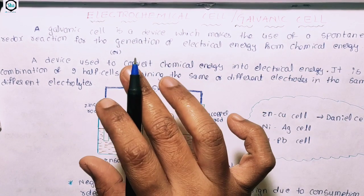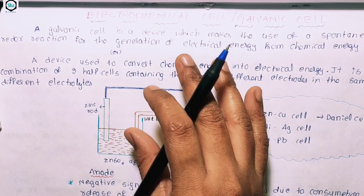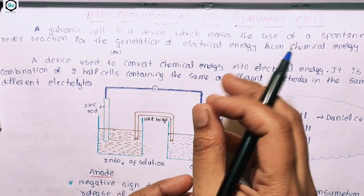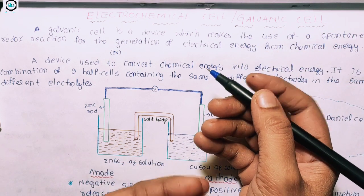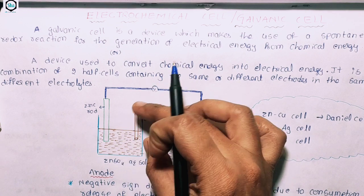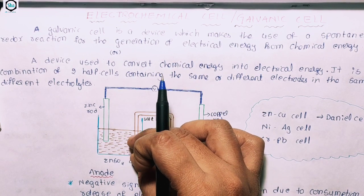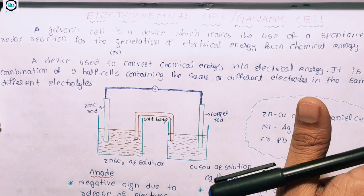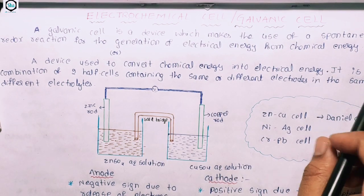The galvanic cell uses a spontaneous redox reaction. A spontaneous reaction is like a waterfall — it occurs naturally. For example, a zinc rod dipped in zinc sulfide solution undergoes a spontaneous reaction. This spontaneous redox reaction is the basis of the electrochemical cell.